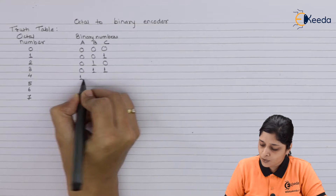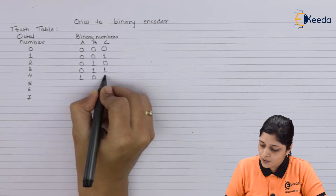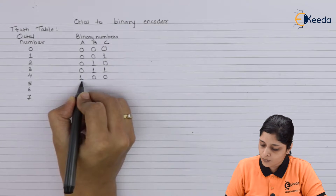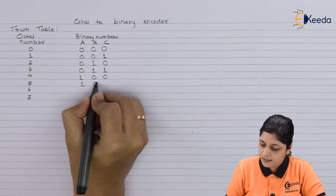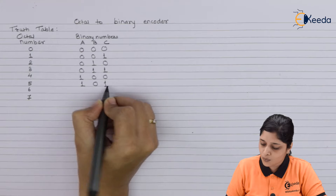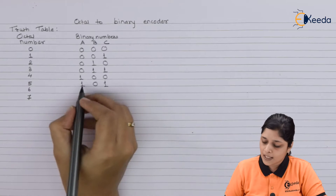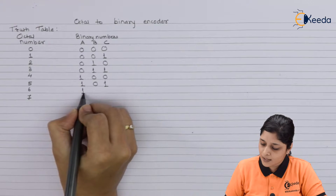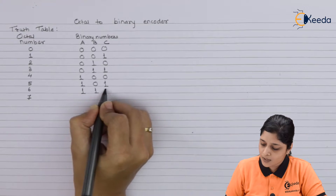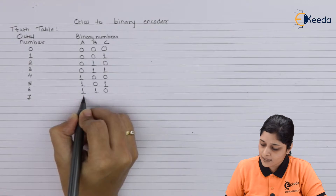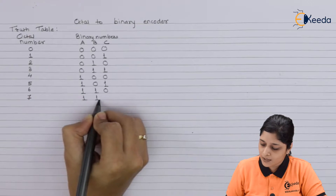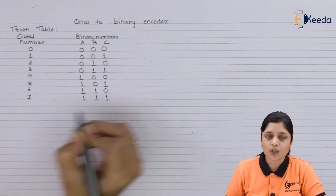For 4, you have 1, 0, 0. For 5, you can write 1, 0, 1. For 6, you can write 1, 1, 0. And for 7, you can write 1, 1, 1.